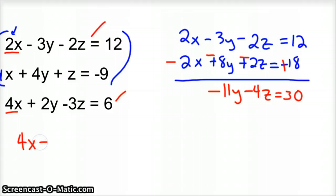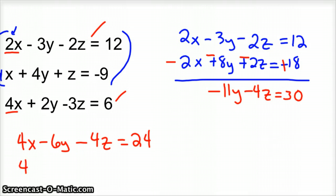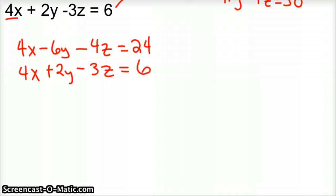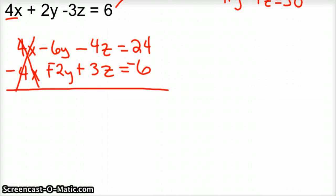So you'd have four x, minus six y, minus four z, equals twenty-four. And then on the bottom equation, we'll keep that the same: four x plus two y, minus three z, equals six. And again, the signs are the same, so we need to eliminate. So I'm going to change the signs in one of my equations — you've got to go all the way across and do it to everything. So changing all my signs: four x minus four x is zero, negative six y minus two y is negative eight y, minus z, and twenty-four and six gives positive eighteen.